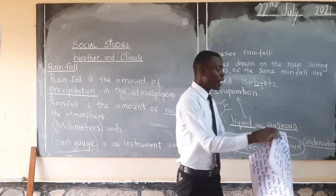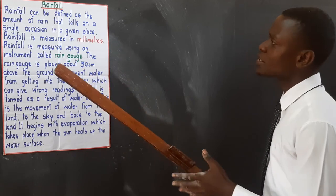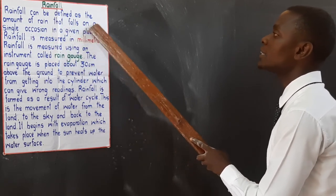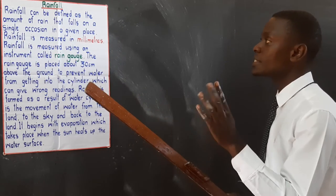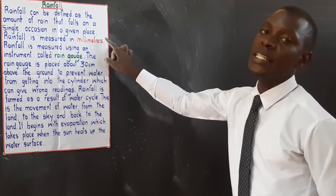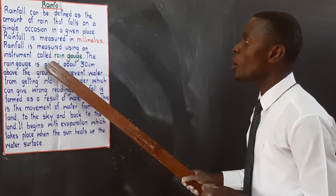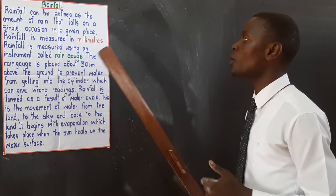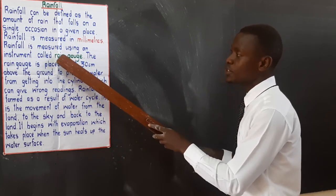Looking at this chart, there is another definition which is also interesting: rainfall can be defined as the amount of rain that falls on a single occasion in a given place. This definition is not different from the ones we gave at first. Rainfall is measured in millimeters — millimeters are the units for rainfall. Rainfall is measured using an instrument called a rain gauge. Don't confuse the units and the instrument: units are millimeters, and the instrument is a rain gauge.